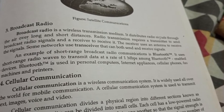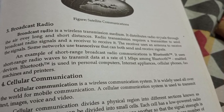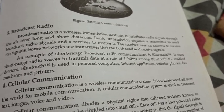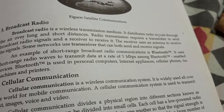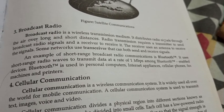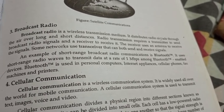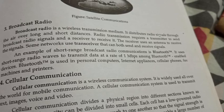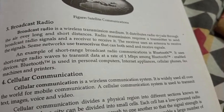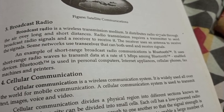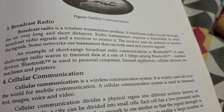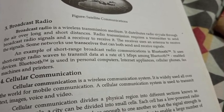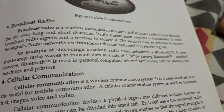Radio transmissions require a transmitter to send broadcast radio signals and a receiver to receive them. The receiver uses an antenna to receive the signals. Some networks use transceivers that can both send and receive signals.